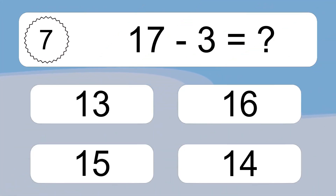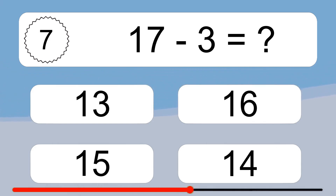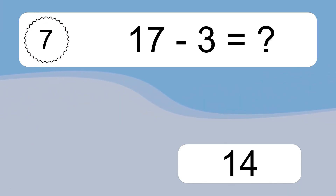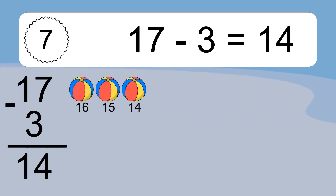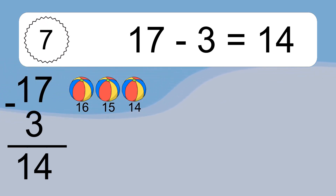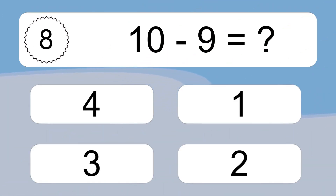17 minus 3 equals what? 17 minus 3 equals 14. Let's count it: 16, 15, 14.